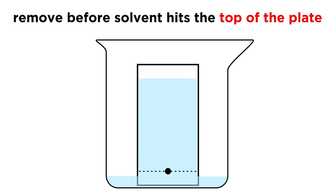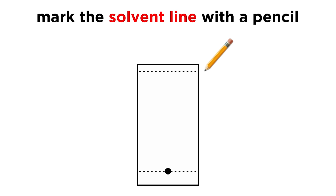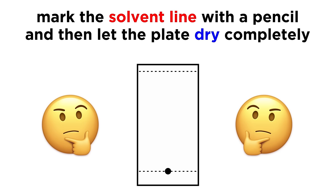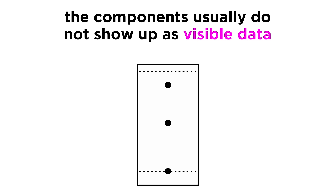Once the solvent is rather close to the top of the plate, but making sure not to let the solvent reach the edge, we remove the plate and quickly use a pencil to mark the solvent line, as this will not be visible in a few moments. Then we let the plate dry. Now it's time to see how far each component traveled. It is possible that the components are visible, but this is typically not the case, so we usually have to use a special technique to see where they are on the developed plate.